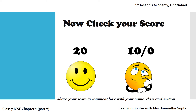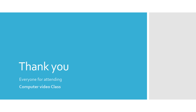I hope you have written both answers correctly. If both answers are correct, your score is 20. If one is wrong, your score is 10, and if both are wrong, it is 0. Students, don't forget to share your score in the comment box along with your name, class, and section — and be honest! This is all about Part 2 of Chapter 1: Computer Hardware and Software. Thank you for attending. Bye bye for now — I hope we will meet again in the next video.